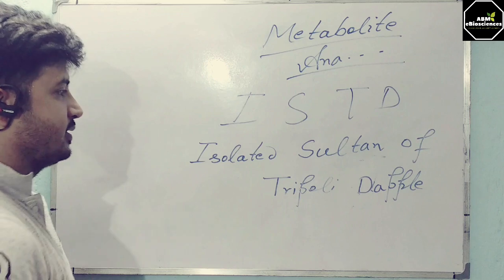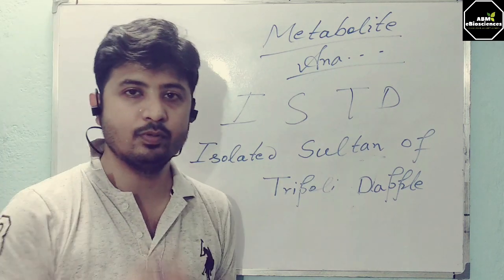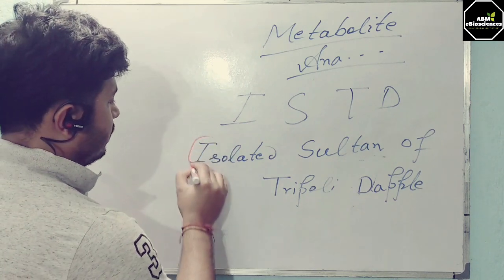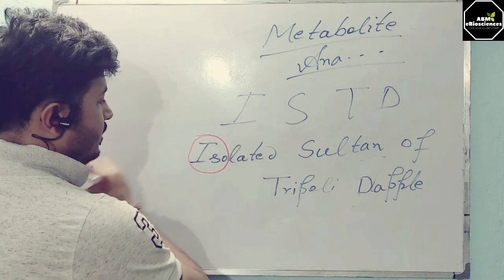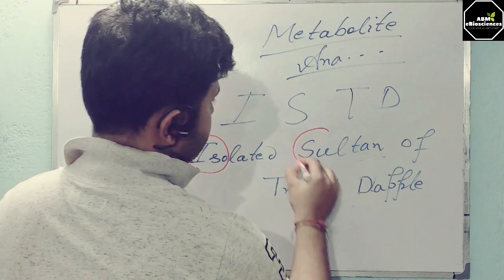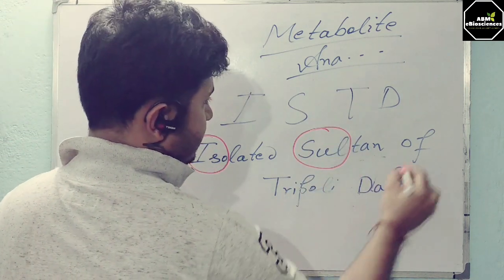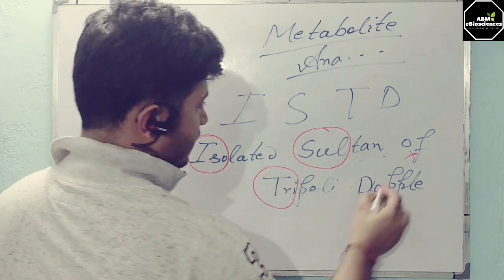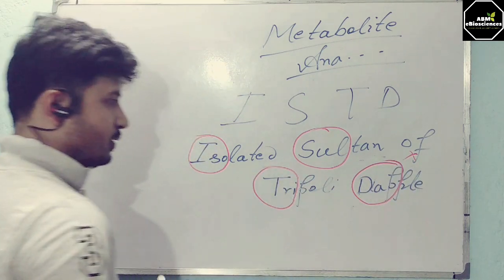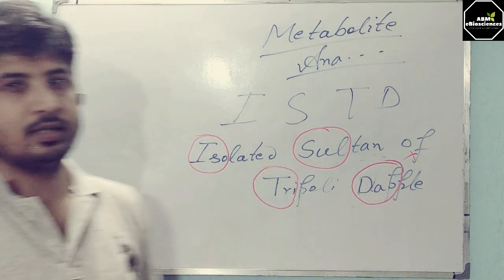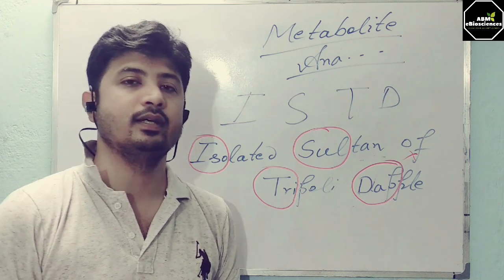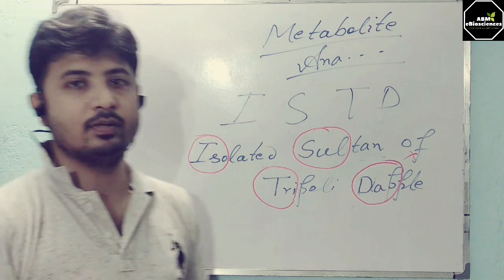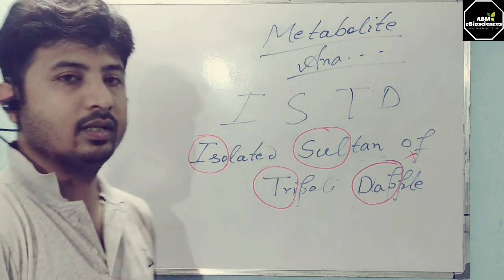For metabolic analogs, the trick is 'ISTD — isolated sultan of tripholi tablet.' From this you can easily identify the four antibiotics: Isoniazid, Sulfonamides, Rifampicin, Trimethoprim, and Dapsone. These are metabolic analogs that mainly affect folic acid synthesis and affect the pyrimidine synthesis pathway for DNA and RNA.